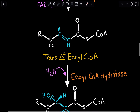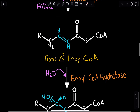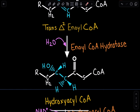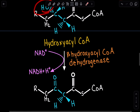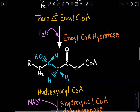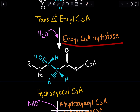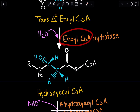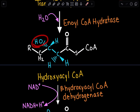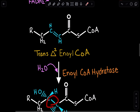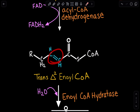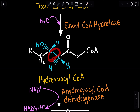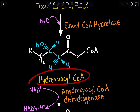Once we have trans-Δ2-enoyl-CoA, the first step was an oxidation step. Next, we do a hydration. Hydration introduces a hydroxyl group, which will eventually become another carbonyl. This reaction is catalyzed by enoyl-CoA hydratase — hydratase because this step is a hydration, and enoyl-CoA is found in the reactant name. As a result, we get introduction of a hydroxyl group and a single bond once again, forming hydroxyacyl-CoA.